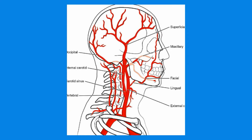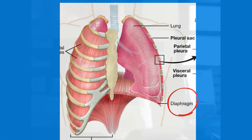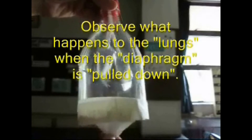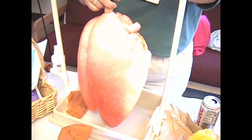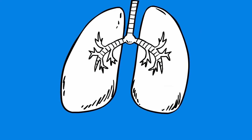The lungs inflate with the help of an expanding rib cage and a muscle called the diaphragm. When the diaphragm moves down, the lungs inflate, and when the diaphragm moves up, the lungs deflate. You breathe around 10 to 20 times a minute.